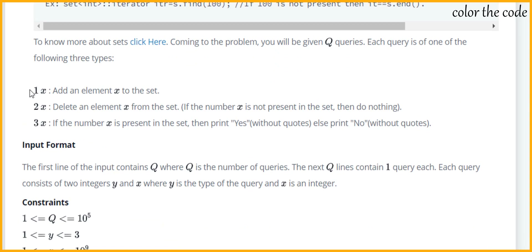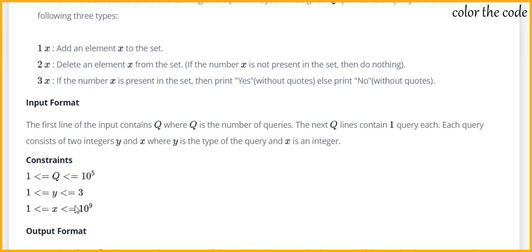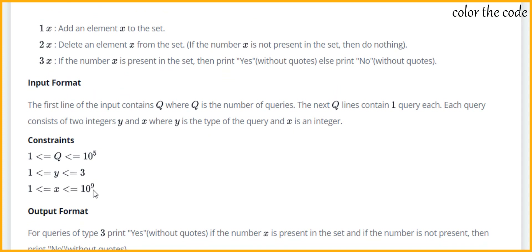So let's see what the input is. You will be provided input in the format 1x, 2x, and 3x, where x is a number which can range from 1 to 10^9. Here 1 indicates that you want to add element x, 2 indicates that you want to delete element x, and 3 means you have to check whether that number is present in the updated set after all prior addition and deletion operations.